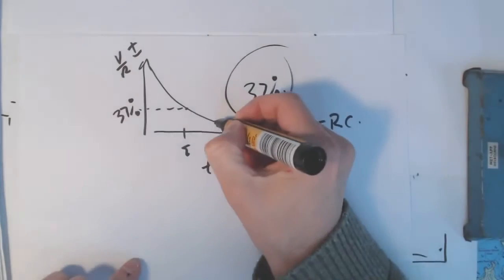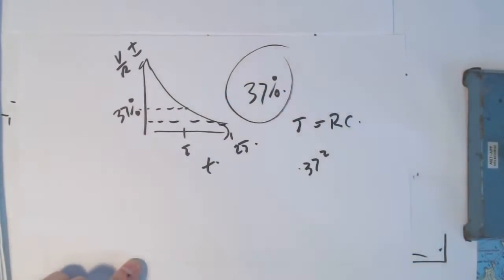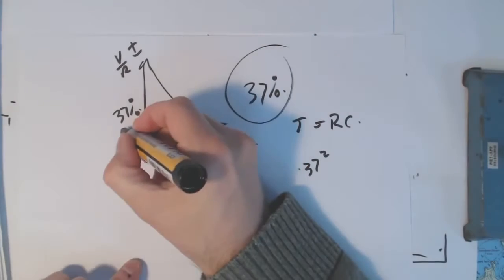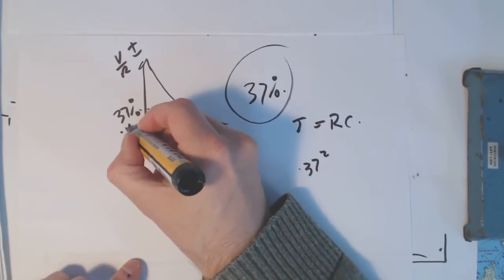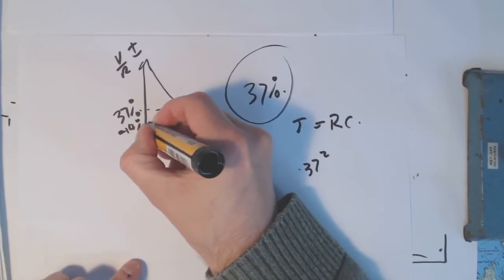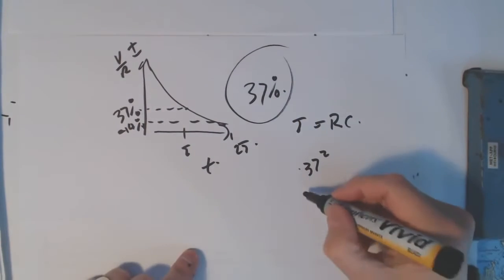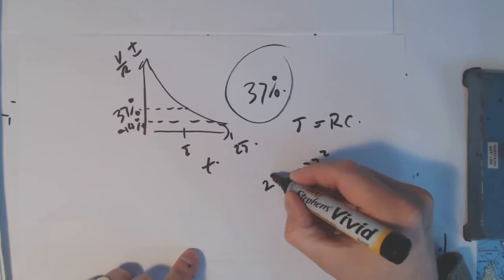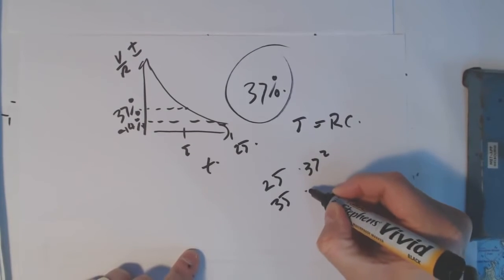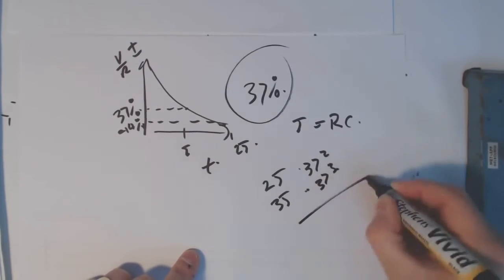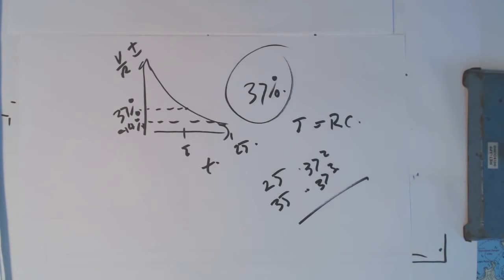So if I want to know after two time constants, then that's pretty much 0.14%. Three time constants. So that was two time constants. Three time constants would be 0.37 cubed. And you can work out the current as time goes by in the circuit.